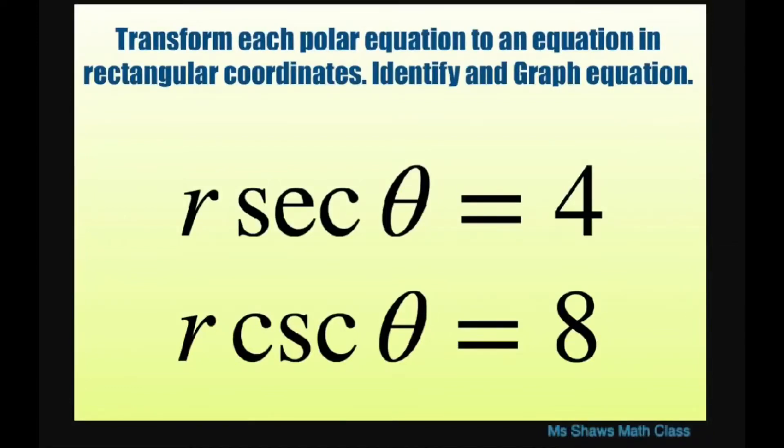Hi everyone. We're going to transform each polar equation to an equation in rectangular coordinates, identify and graph the equation. We have r times secant of theta equals 4 and r times cosecant of theta equals 8.